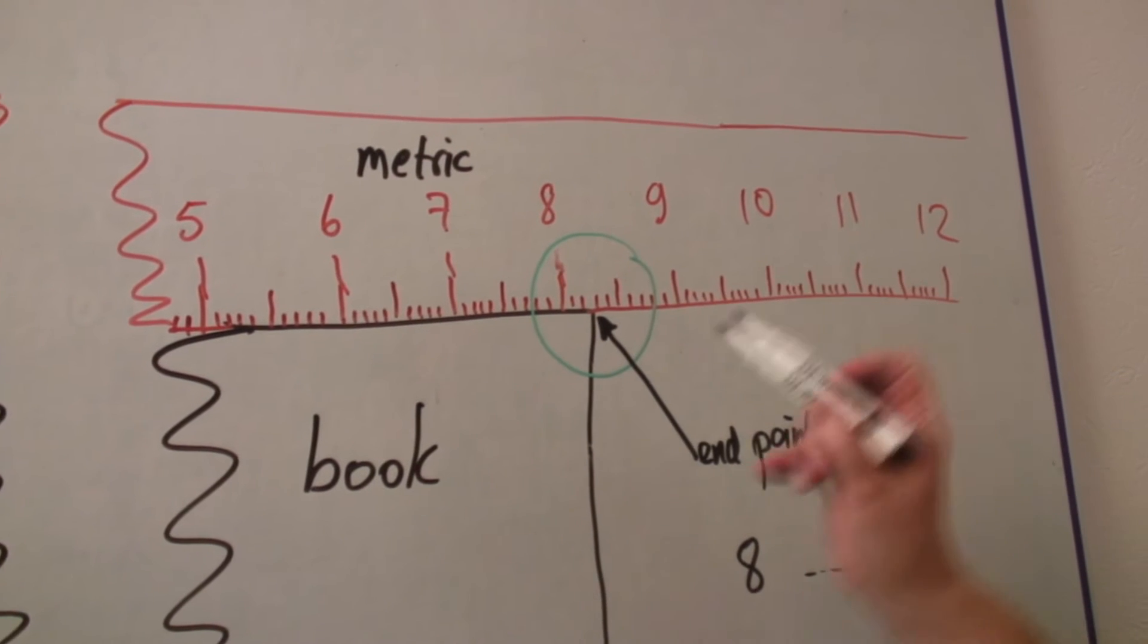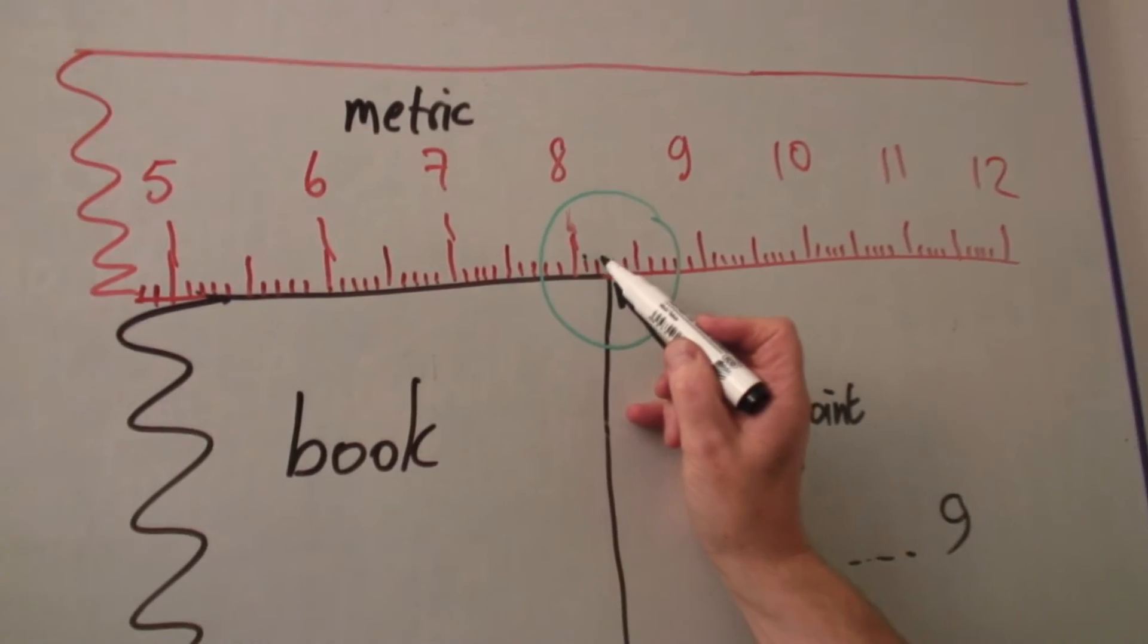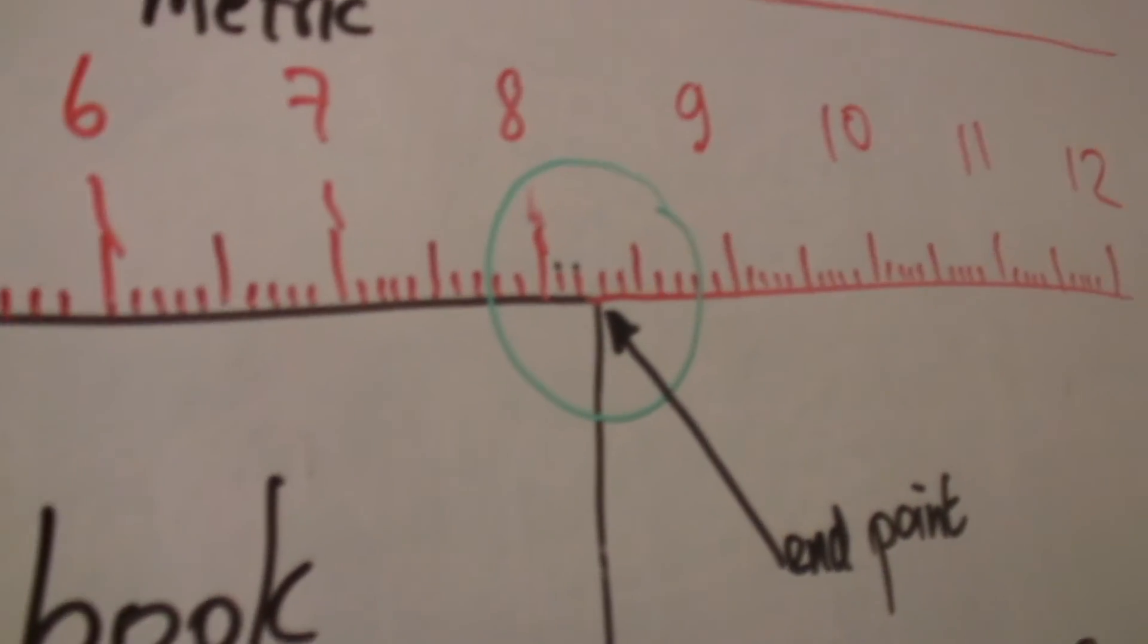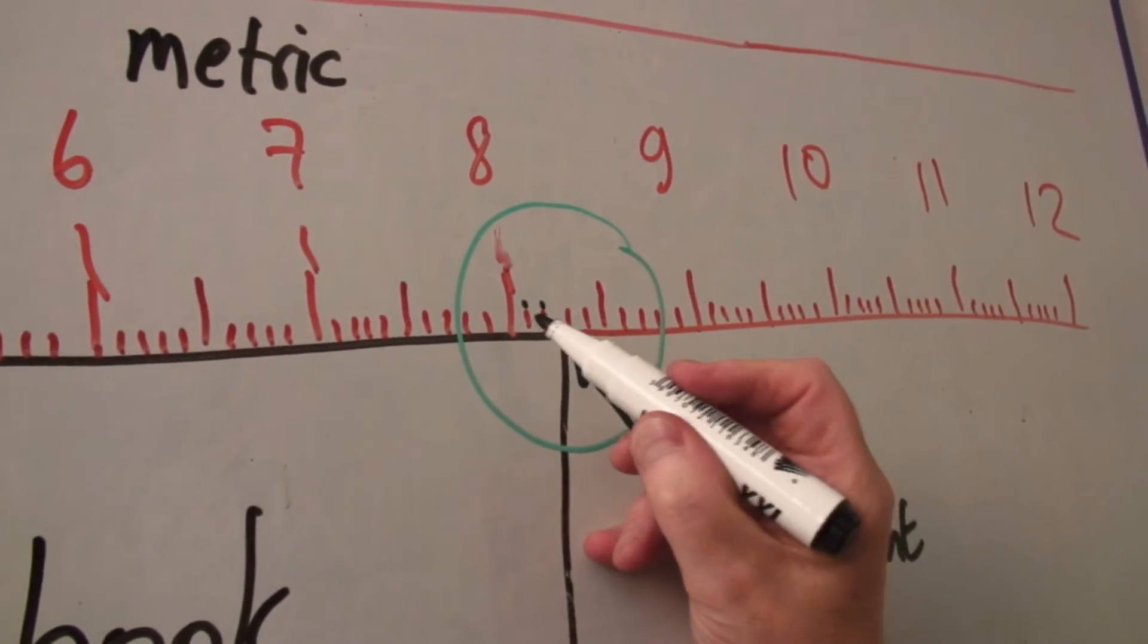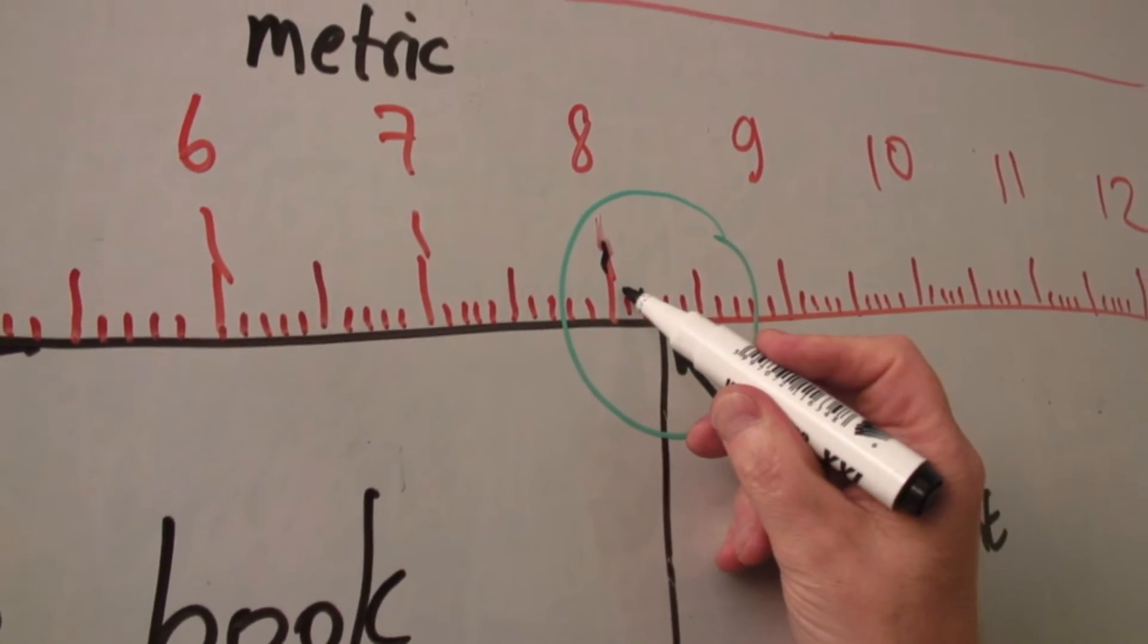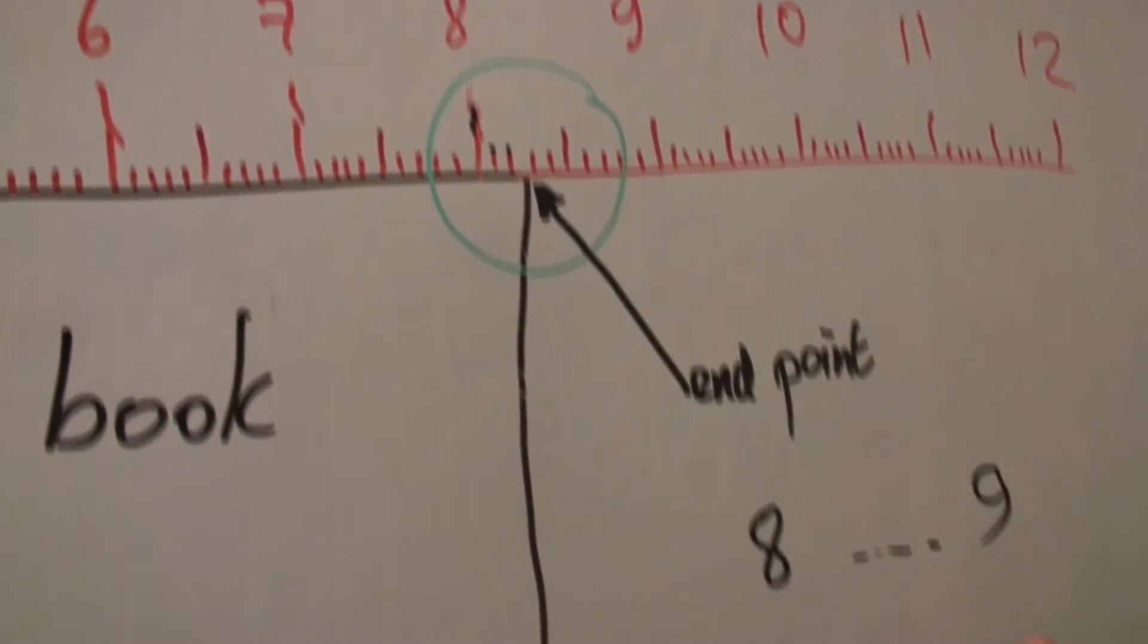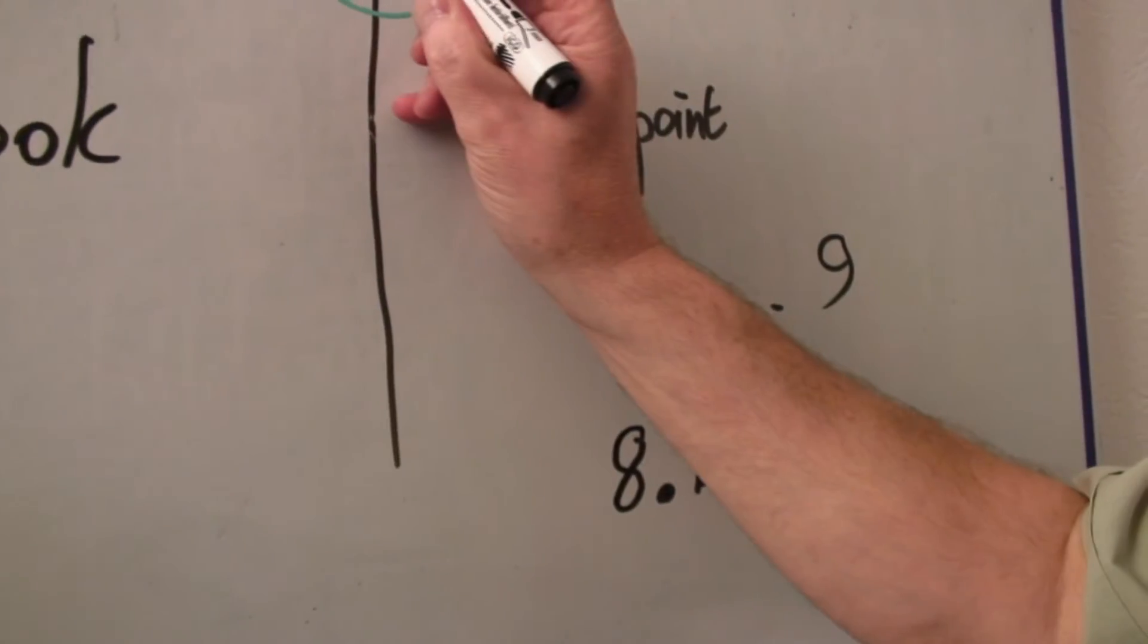Now, if you look at the smaller measures, you can see that there are one, two small divisions. So this is eight here. This is eight. Eight point one, eight point two. So I can put point two, because that is the second marker.